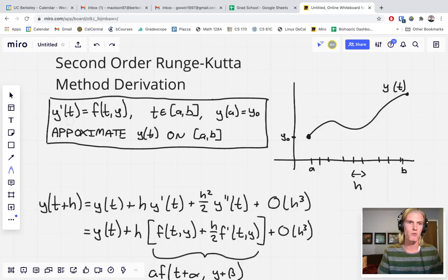So we're given an initial value problem. We have our derivative of y, we have an interval we're interested in, and we have an initial value for y and we would like to approximate y on this interval.